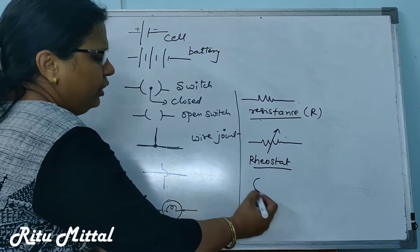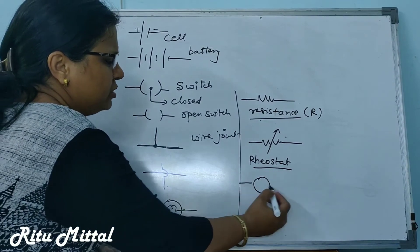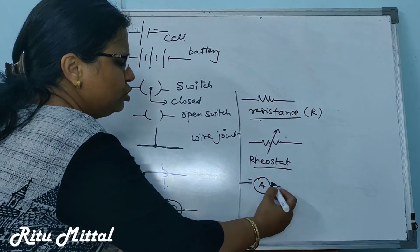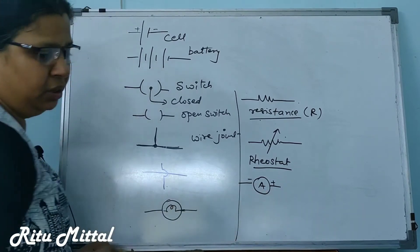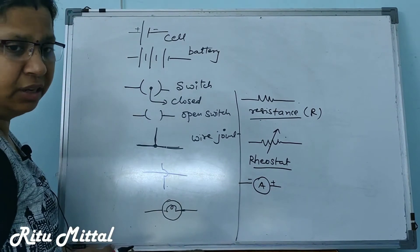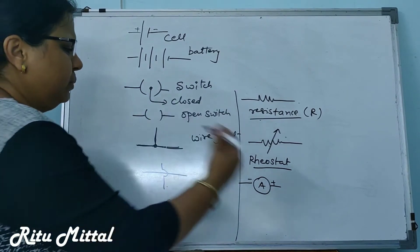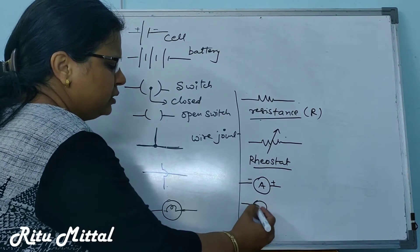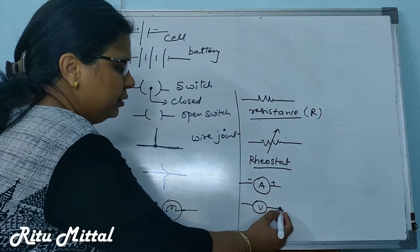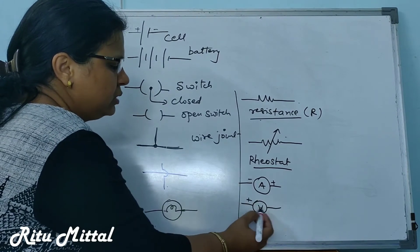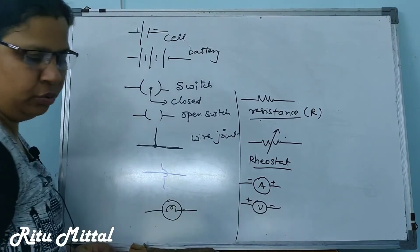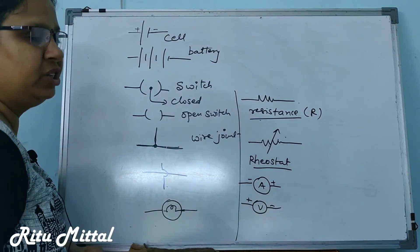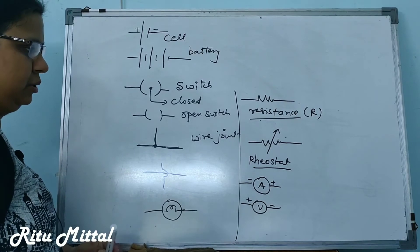The symbol for an ammeter is A — it is used to measure the current in a circuit. Similarly, we have a voltmeter, which is used to measure the voltage in a circuit.